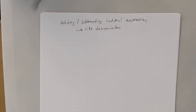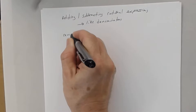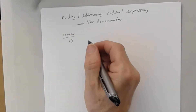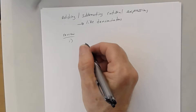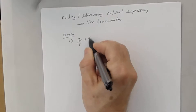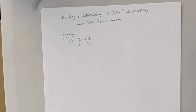Let's talk about adding and subtracting rational expressions with like denominators. Let's review something from a while back - adding and subtracting fractions with like denominators. For example, 3 fifths plus 4 fifths. Why is adding these two fractions so easy for us?